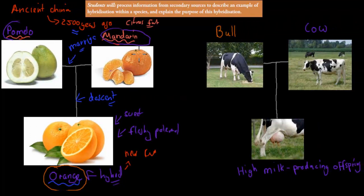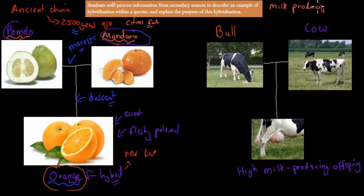That's example number one. And the other example is quite relevant for Australia. So in Australia we often want to have milk producing cows, so cows that produce lots of milk. And because it's a very scientific kind of way of doing it, we actually want to make sure we get the most milk out of our cows.